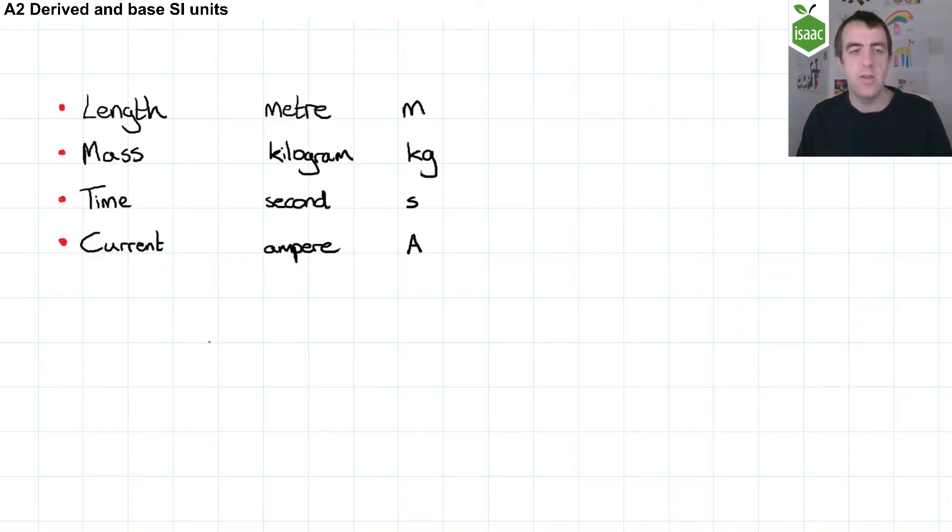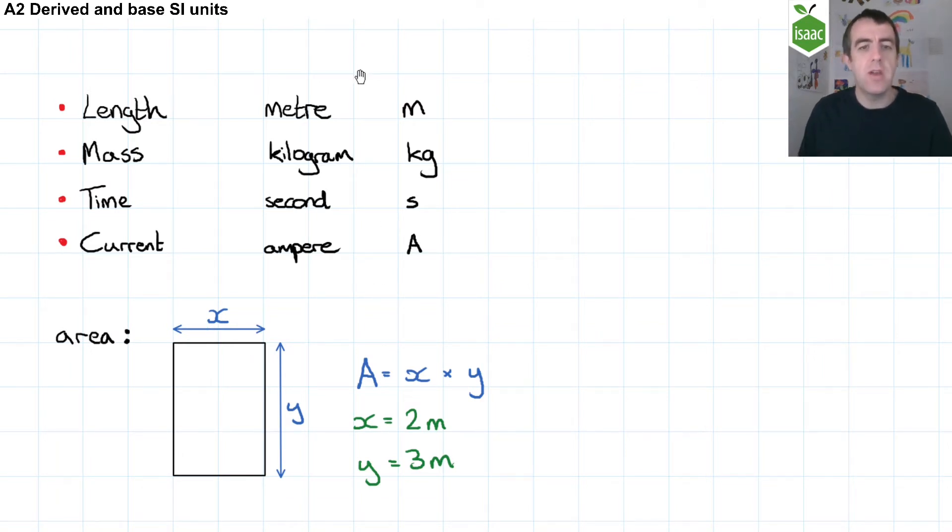So any length, for example a height, can be expressed in metres. But what about an area? Well, an area of a shape, for example a rectangle, is calculated by multiplying two lengths together. In this case, x multiplied by y. Well, in this case, let's say x is two metres and y is three metres. Then when we multiply those numbers together, we can see that's six,